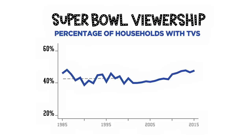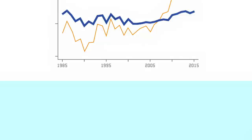This chart of how many people watch the Super Bowl each year makes it look like the event's popularity is exploding. But it's not accounting for population growth. The ratings have actually held steady, because while the number of football fans has increased, their share of overall viewership has not.